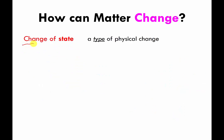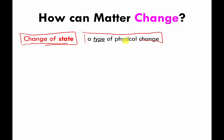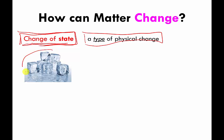There's a special kind of physical change called a change of state. An example of this is illustrated with water — these are cubes of ice, which is definitely water, but it's frozen water, so it's solid. We can say that this water is in a solid state.